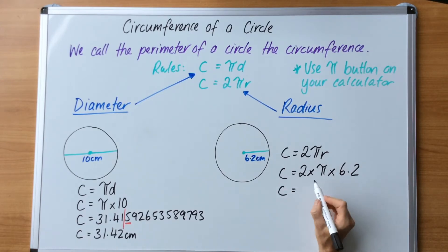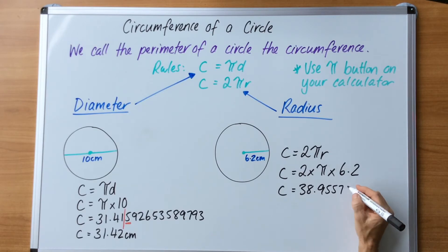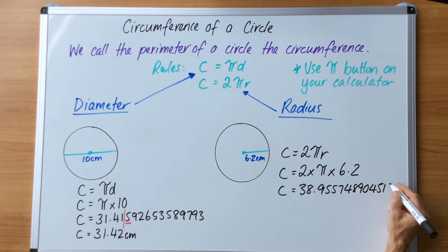I get my calculator and I punch this in using the pi button and I get an answer of 38 point 9 5 5 7 4 8 9 0 4 5 1 3 4 4 and that will keep going.